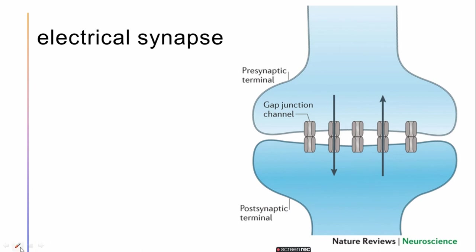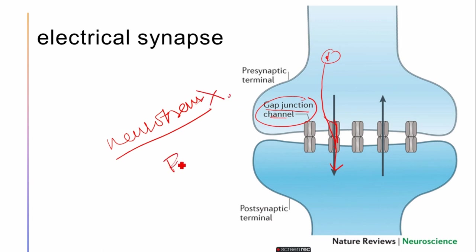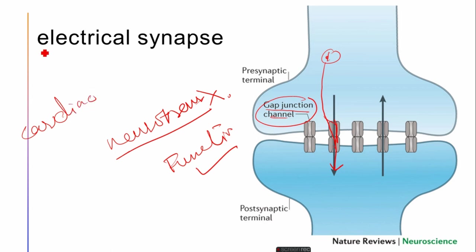The electrical synapse does not need any neurotransmitter. The signal passes from one neuron to another with the help of gap junctions. Because no neurotransmitter is needed, the function is very, very fast. In the case of cardiac muscles, the electrical synapse works very efficiently.